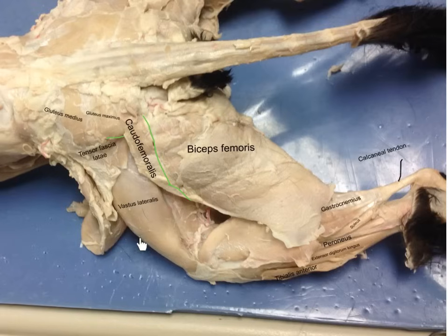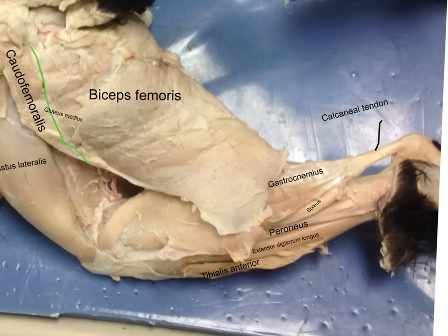From this view, we have the vastus lateralis. We've zoomed in on the calf. We have the gastrocnemius, the soleus, peroneus, extensor digitorum longus, and tibialis anterior. And then the calcaneal tendon.